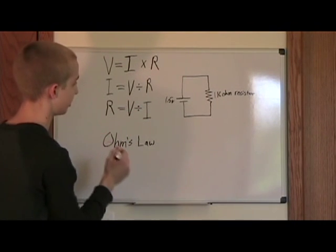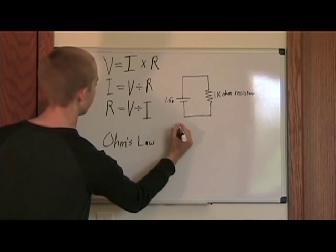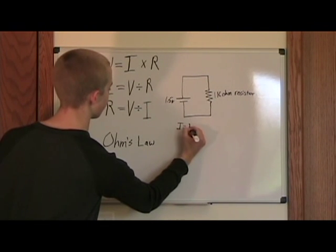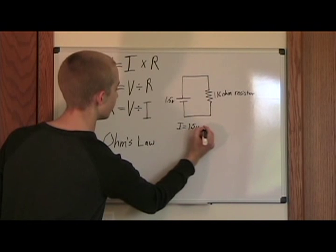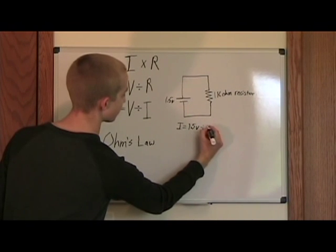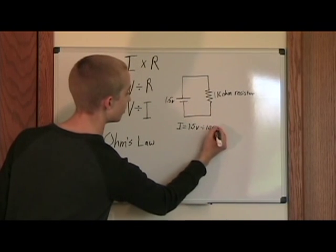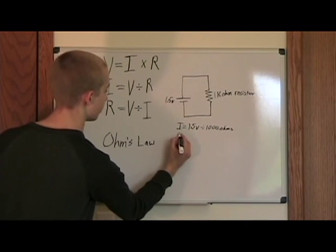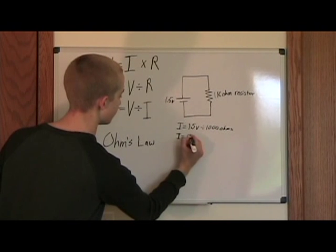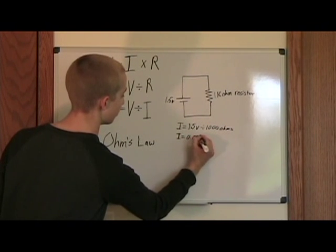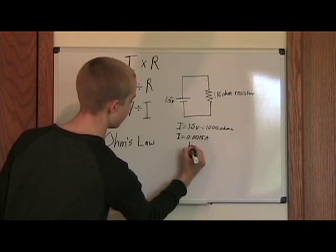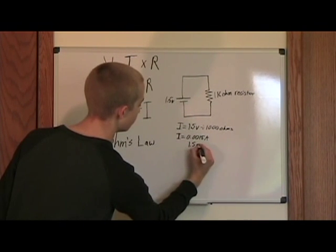So let's use this equation here to demonstrate Ohm's Law. We have current equals voltage, which is 1.5 volts, divided by the resistance, which is 1,000 ohms. So I is equal to 0.0015 amps, which is the same as 1.5 milliamps.